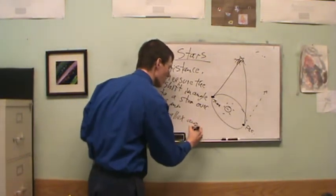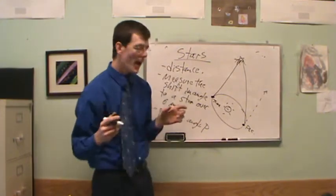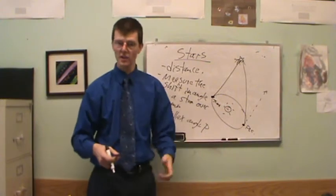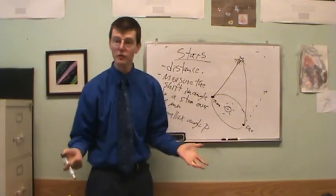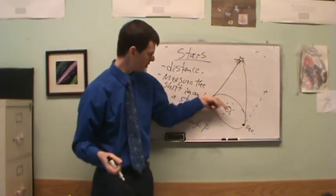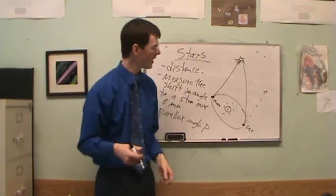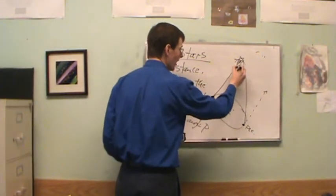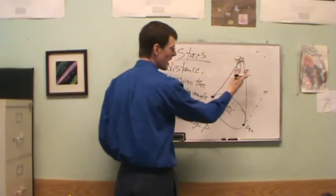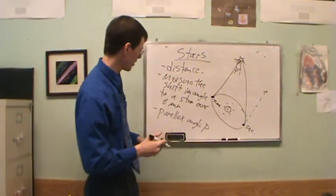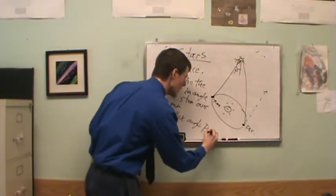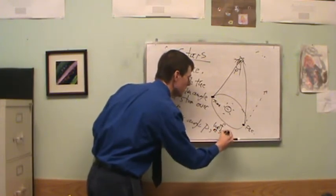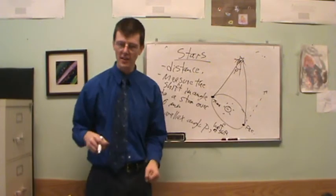The parallax angle, we call it P. This allows us to calculate the distance to the stars. We know the distance to the sun — 93 million miles, 150 million kilometers. The parallax angle P is half of the angular shift over the course of a year.